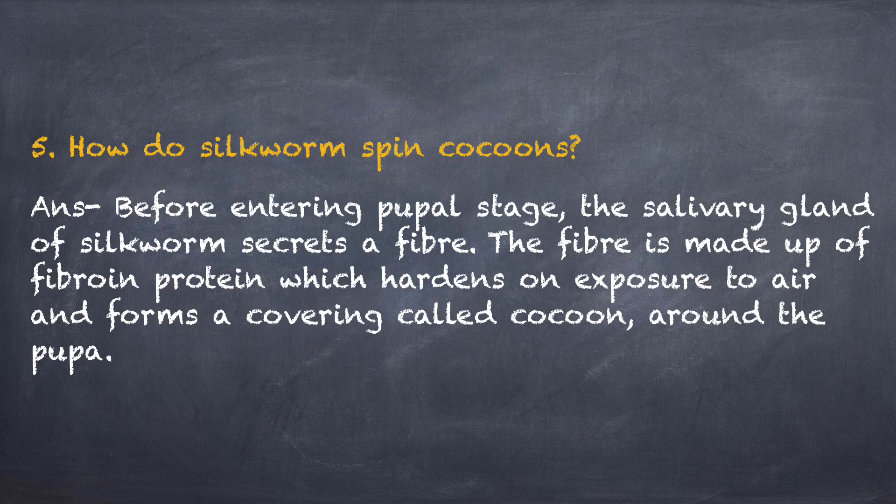How does a silkworm spin cocoons? Answer: Before entering the pupal stage, the salivary gland of the silkworm secretes a fiber. The fiber is made up of fibroin protein which hardens on exposure to air and forms a covering called cocoon around the pupa.